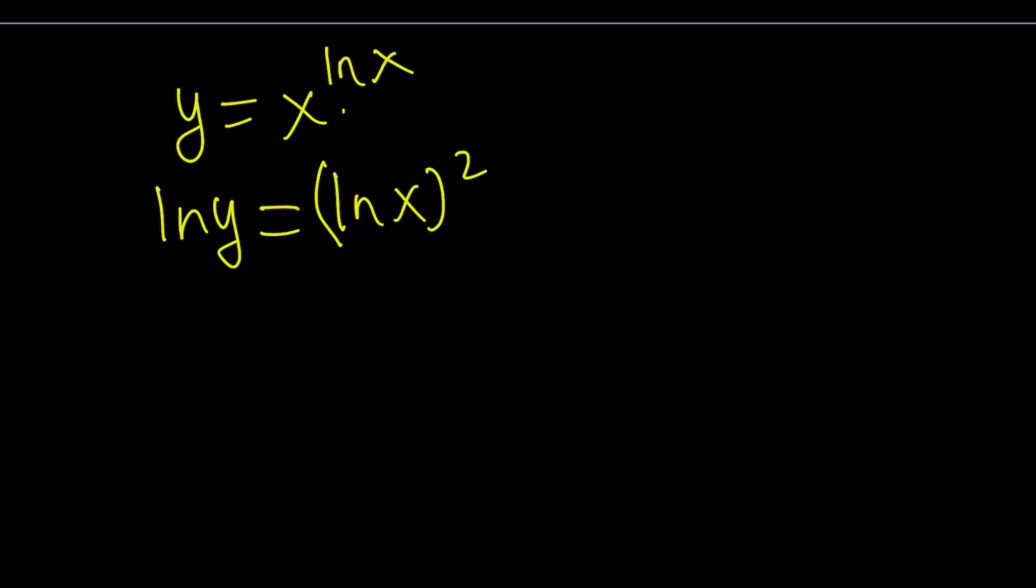Now, I would like to differentiate both sides. But remember, y is a function of x. So, it's going to be kind of implicit. y prime over y. You're going to use the chain rule. And this is going to be the power: 2 times ln x. And then you have to multiply by the chain rule again. Multiply by the derivative of the inside, which is 1 over x.